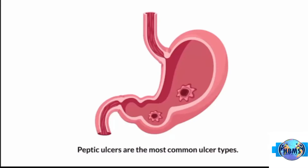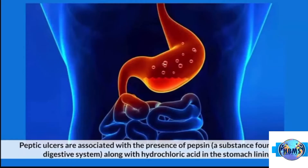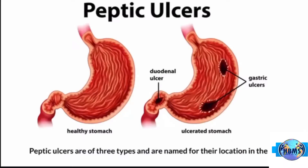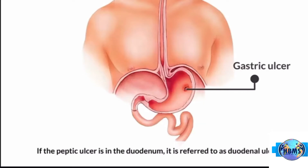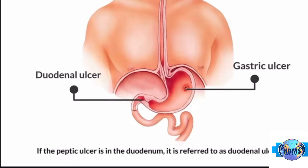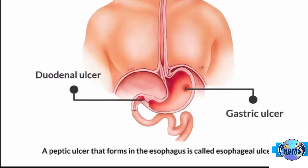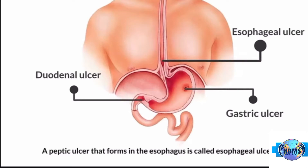Peptic ulcers are the most common ulcer type. They are associated with the presence of pepsin, a substance found in the digestive system, along with hydrochloric acid in the stomach lining. Peptic ulcers are of three types, named for their location: a gastric ulcer is in the stomach, a duodenal ulcer is in the duodenum, and an esophageal ulcer forms in the esophagus.